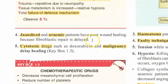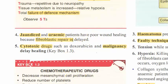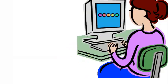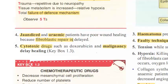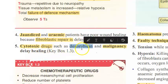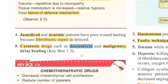In jaundiced or uremic patients, wound healing is poor because fibroblastic repair is delayed. You shouldn't just say wound healing is bad in these patients — you should specify that fibroblast activity is delayed.